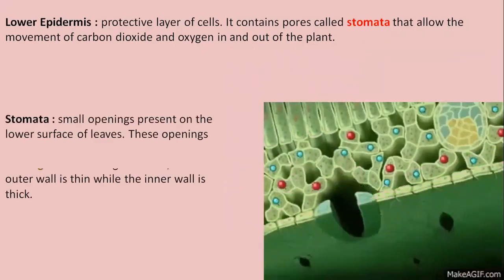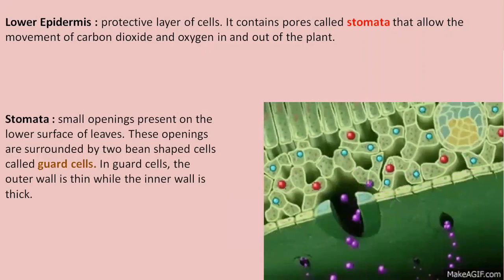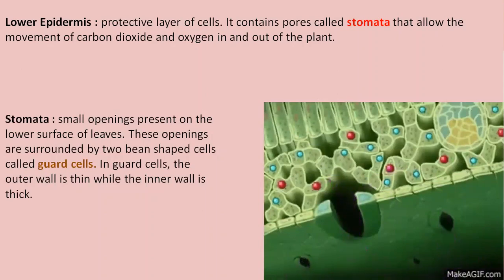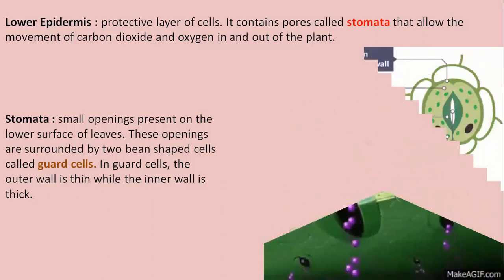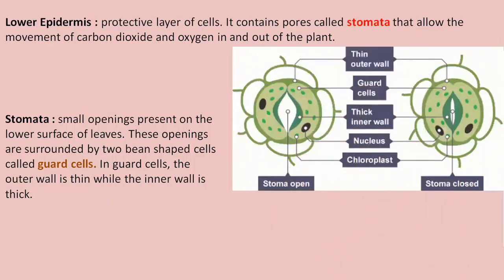Each stoma is surrounded by two bean-shaped cells known as guard cells, which regulate the opening and closing of the stomata. These guard cells contain chloroplasts and are made up of two walls — the outer wall is thin whereas the inner wall is thick.